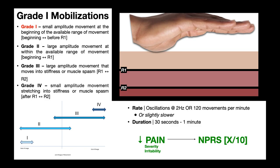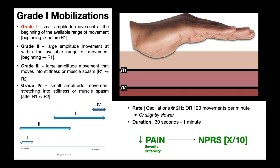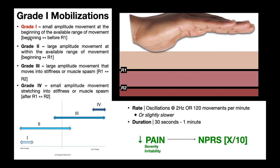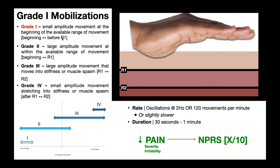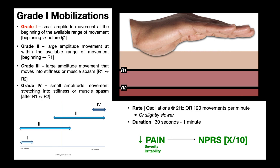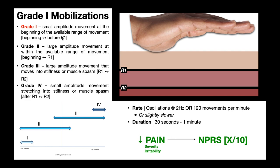Grade one mobilizations are small amplitude movements at the beginning of the available range of movement. We're starting at the beginning — basically just the surface of the skin — and pushing on that soft tissue, but not getting up to R1. We're not taking up all the slack in the soft tissue; we're only taking up some of the slack. We haven't yet felt that first tissue resistance. The best way to think about grade one mobilizations is that these are basically just baby reps — very small movements.